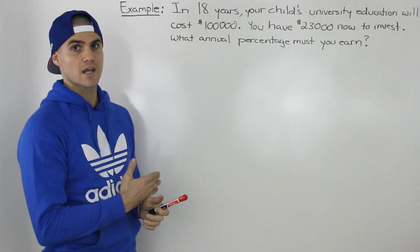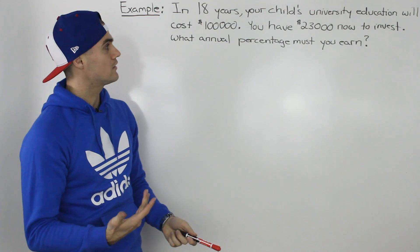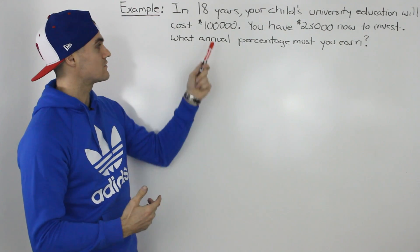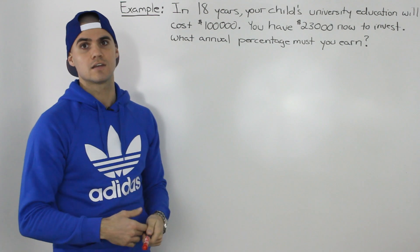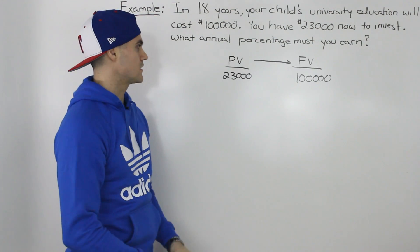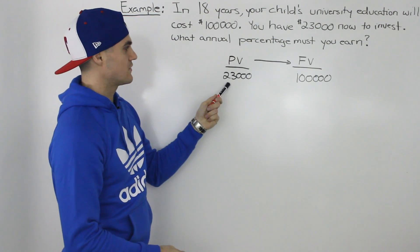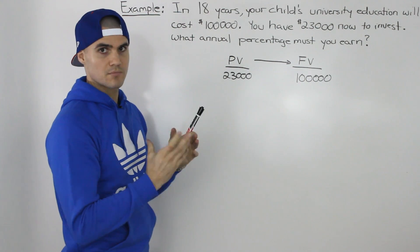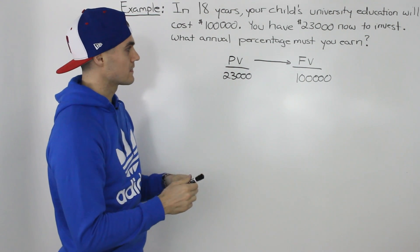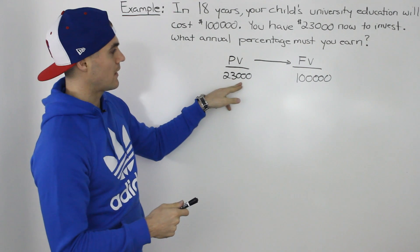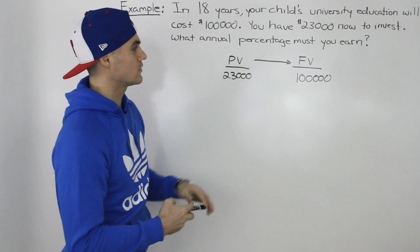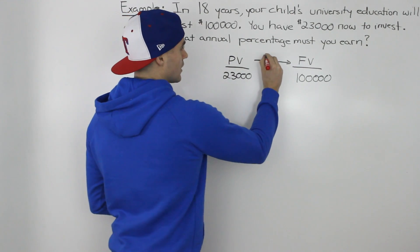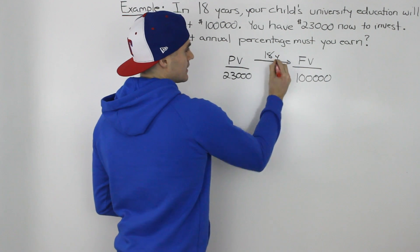Or what annual percentage must your investment of $23,000 earn in order to cover that cost of $100,000 in 18 years? So to show this in a diagram, our present value is $23,000, the amount we have to invest today. And we have to grow that amount to $100,000 in 18 years.